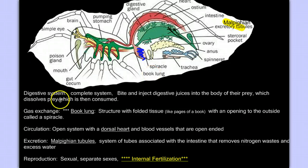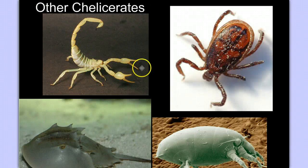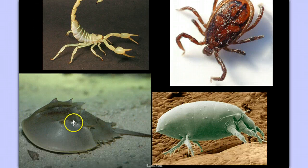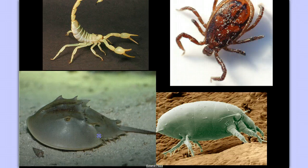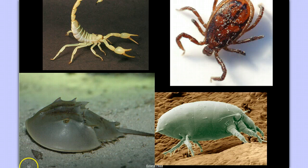Since we're using the arachnids to represent all of the chelicerates — the chelicerata subphylum of the arthropod phylum — we should look at the other chelicerates, which include scorpions, ticks, mites like dust mites, and the horseshoe crab. Be careful with horseshoe crab, because crabs are crustacea, but the horseshoe crab is actually more closely related to spiders — it's a chelicerate rather than a mandibulate like the crustacea.